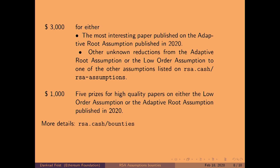We also have a $3,000 bounty for the most interesting paper published on the adaptive root assumption in 2020, or any other unknown reductions between those assumptions shown earlier. And we are giving out five prizes for any high-quality papers on the low-order assumption and the adaptive root assumption in 2020.